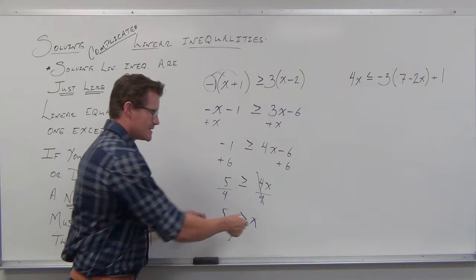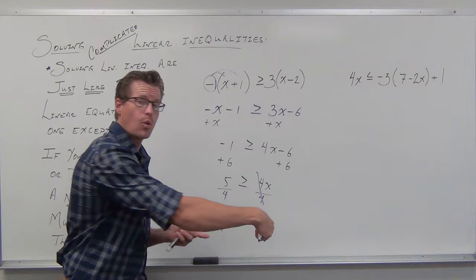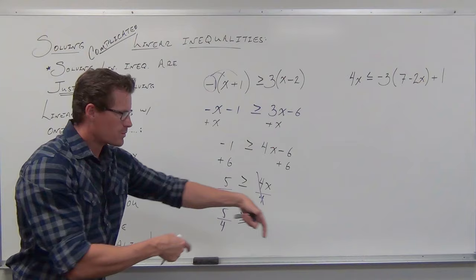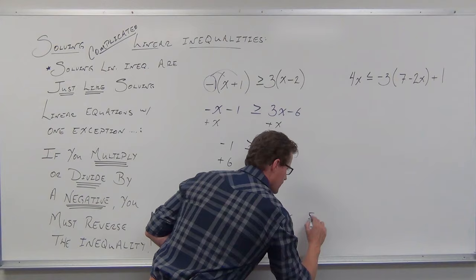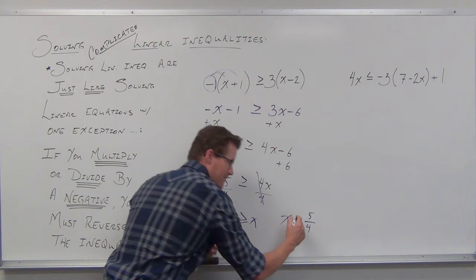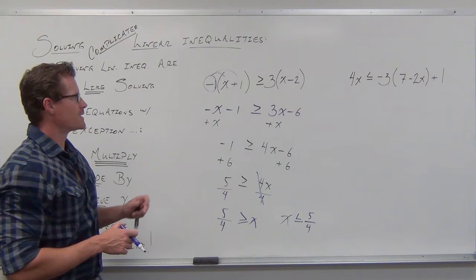What is going to reverse the inequality is this: the expression is written out of order for me. I like my variable on the left-hand side, because then my inequality points to the direction on my number line that I should be graphing. So I'm going to pick this whole thing up and reverse it — that means x is on the left and 5/4 is on the right. And because I'm reversing the order of the inequality, I've got to reverse the inequality sign.